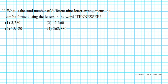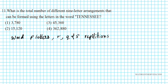So if you have a word with P letters and you have R, Q, and S repetitions, the number of unique arrangements of the letters can be given by P factorial divided by the repetitions — R factorial times Q factorial times S factorial.